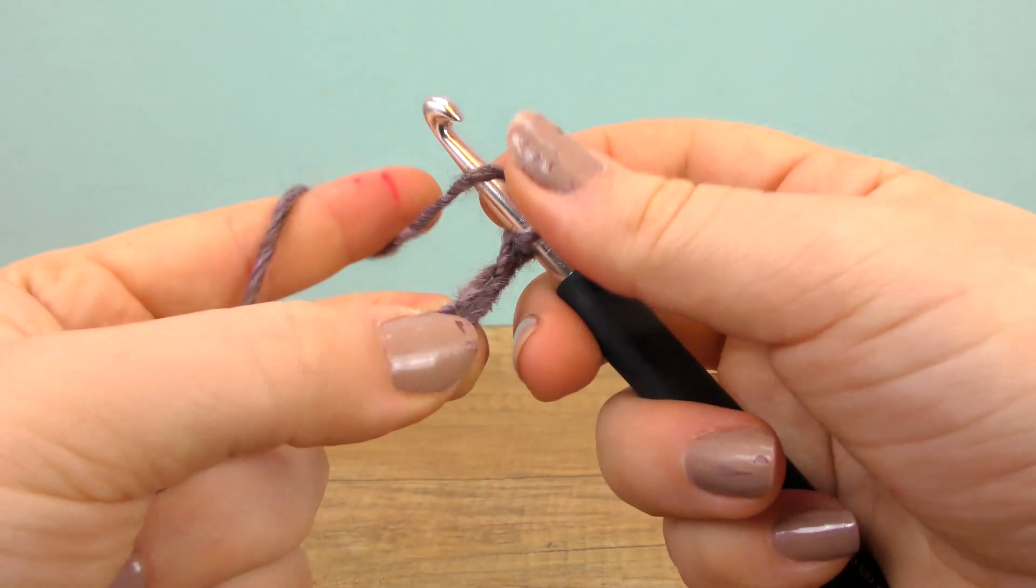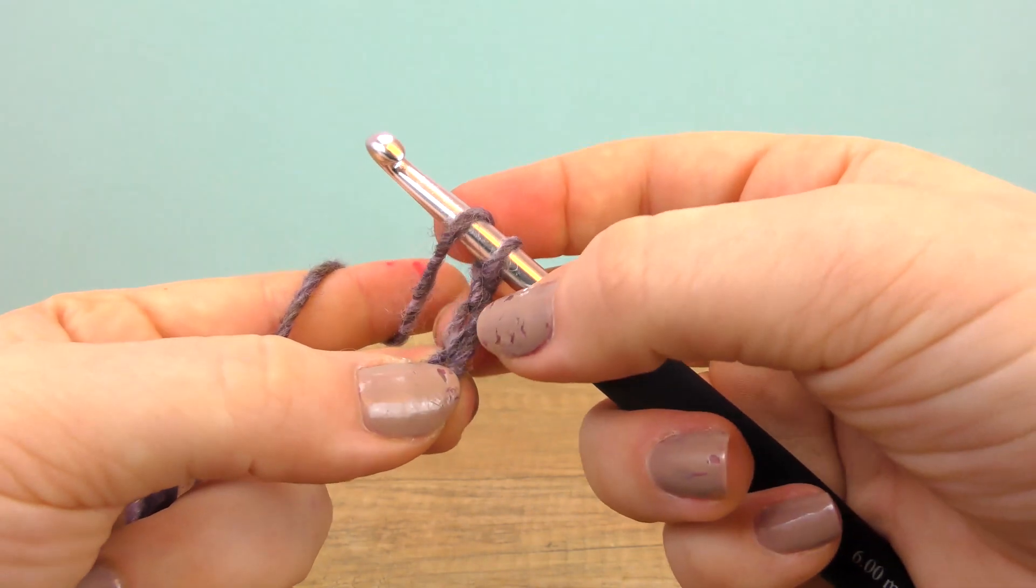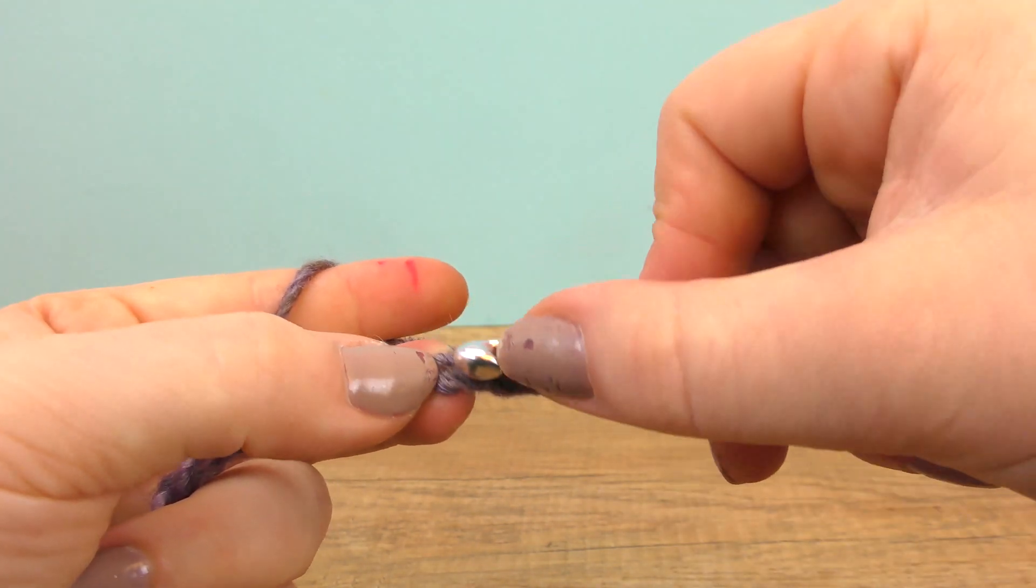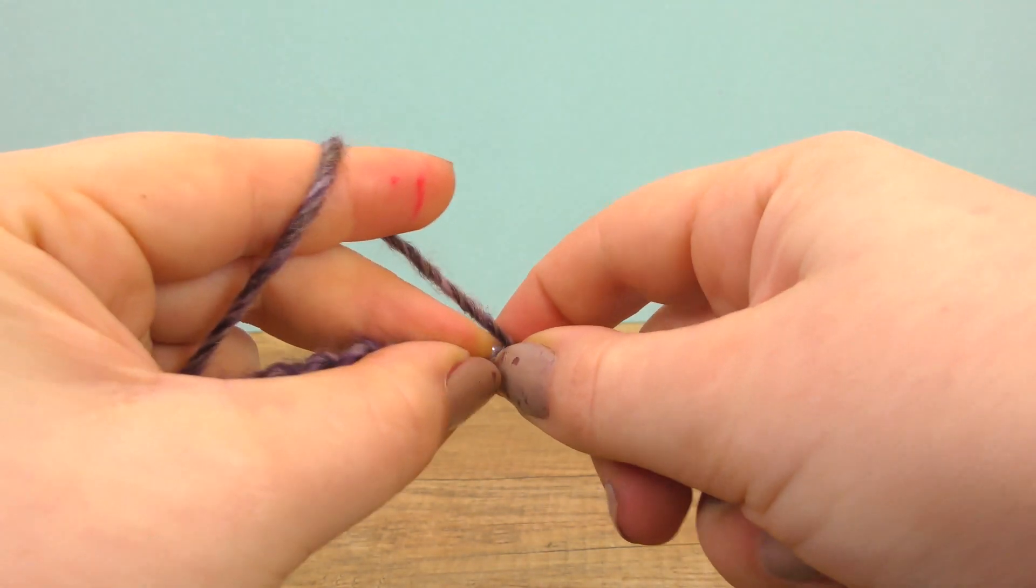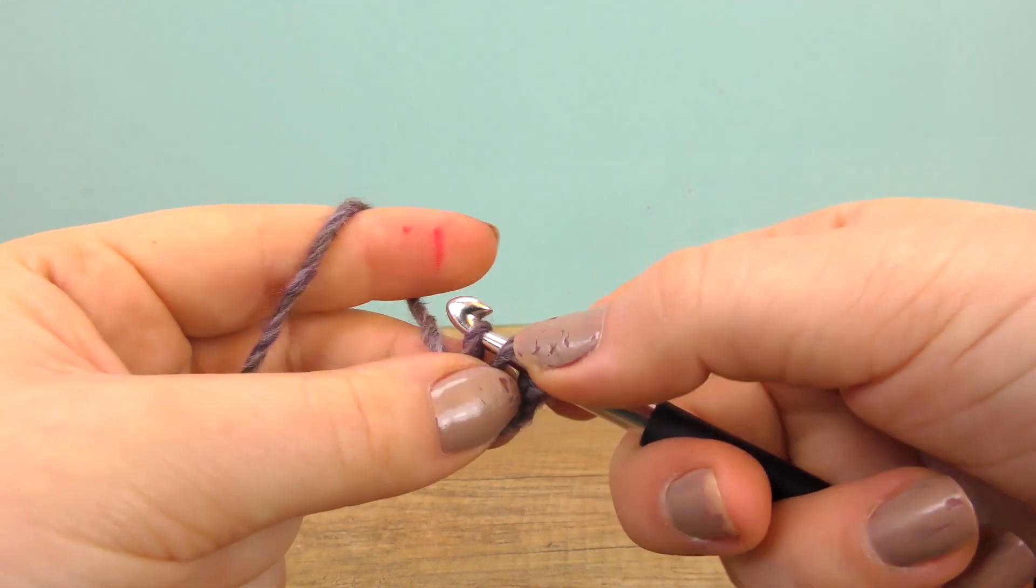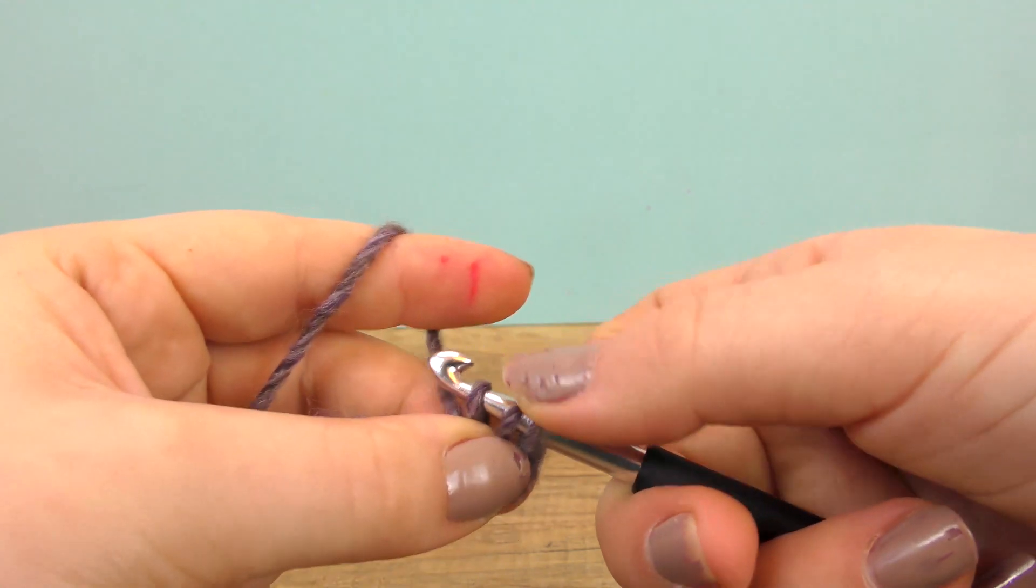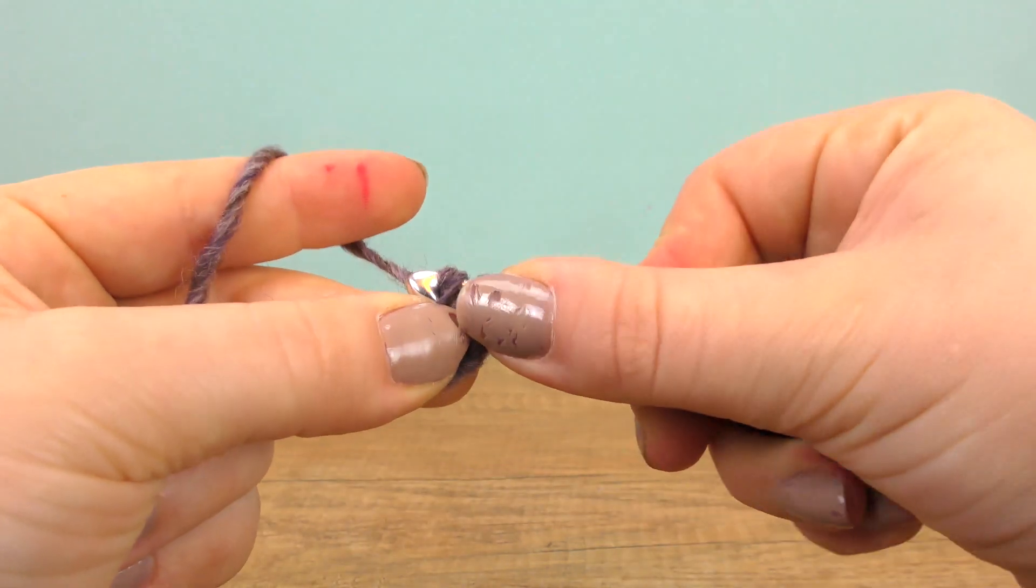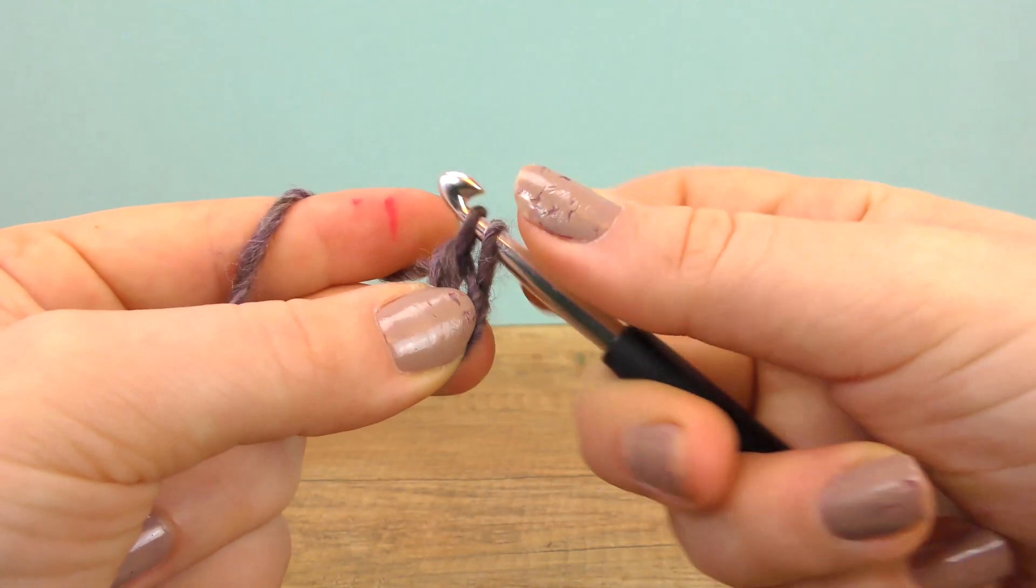Yarn over the needle, here into the chain 60. We skip the two for the height. We do a treble there, through two loops and then again through the two remaining loops.